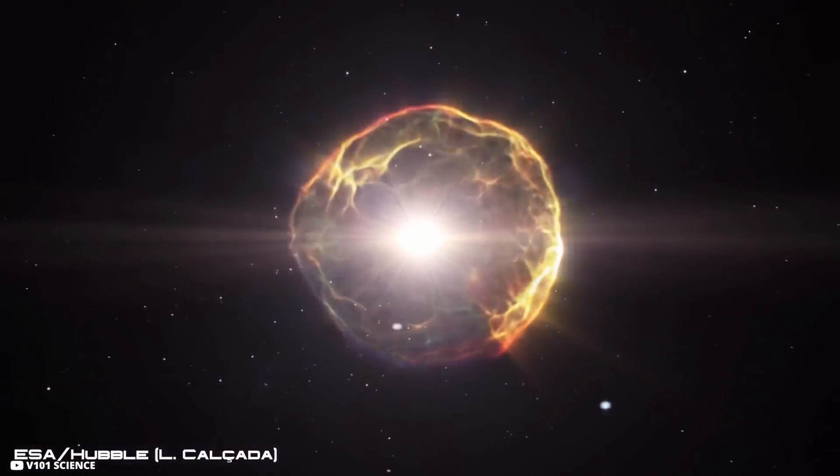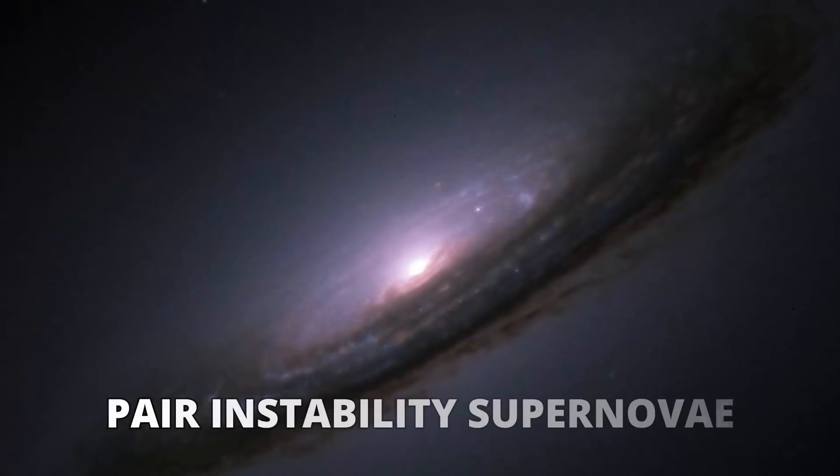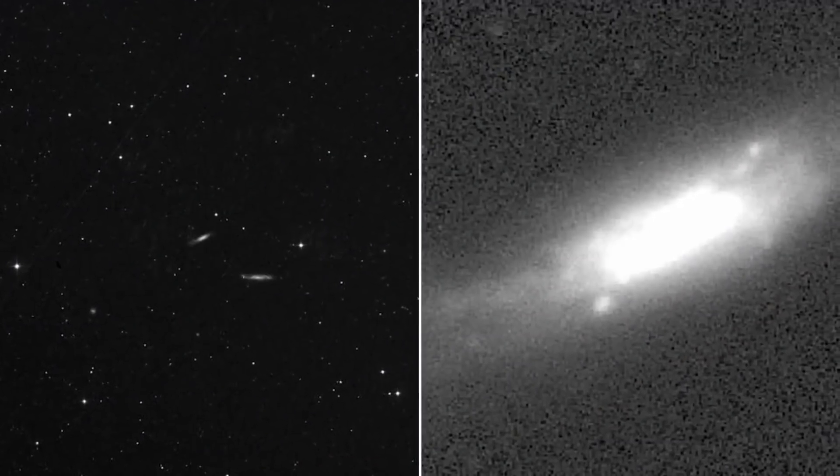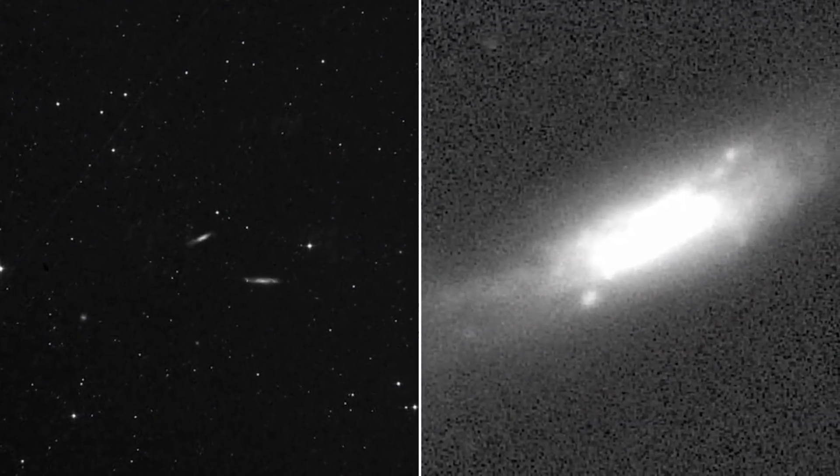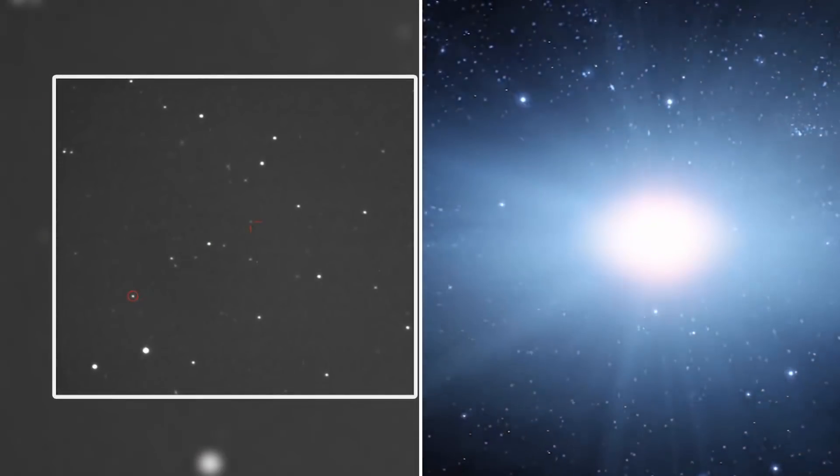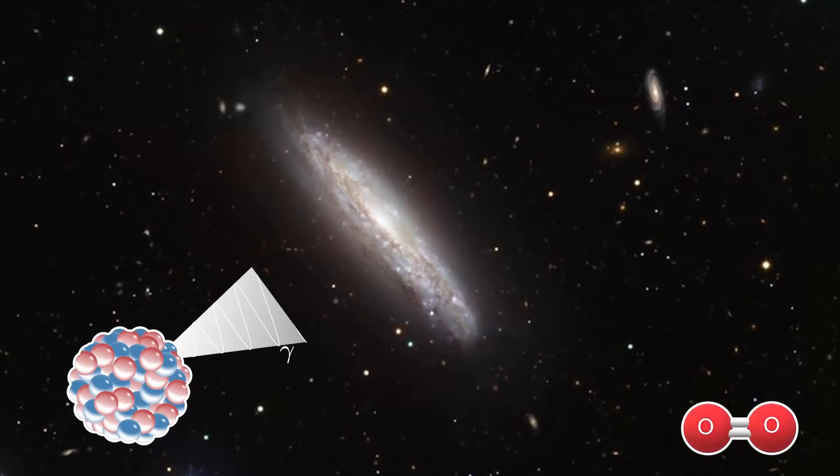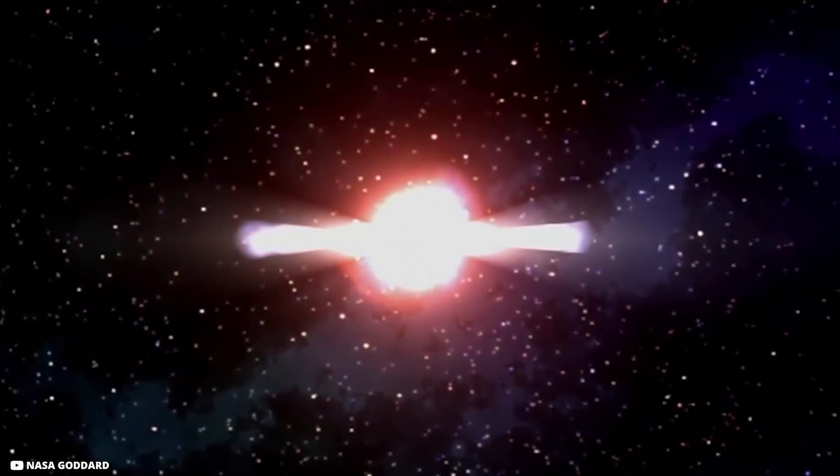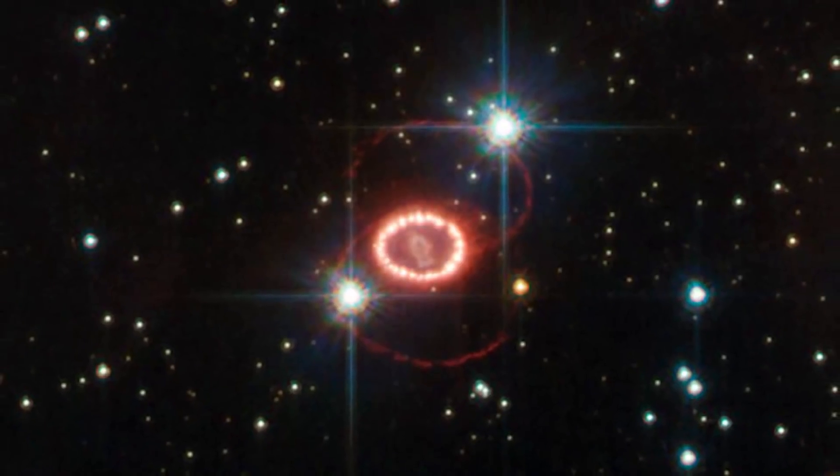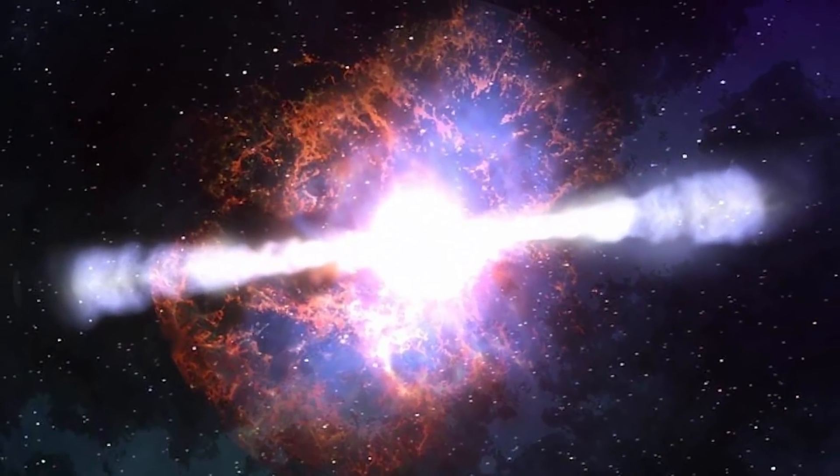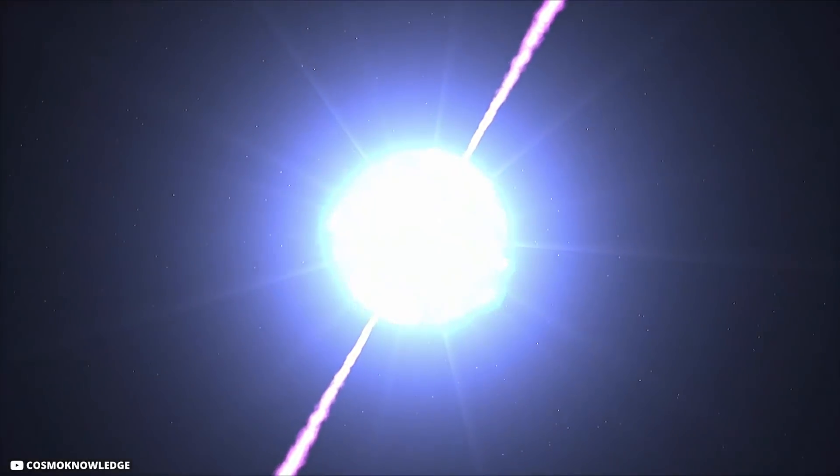The explosions that leave no trace are known as PISN, or pair instability supernovae, and scientists believe that this is how the initial stars, also known as Pop III stars, vanished. The SN2007BI is thought to be the first pair instability supernova ever seen. The oxygen core of a supernova generated by a gamma-ray driven antimatter manufacturing star became so massive that it began to discharge intense photons, creating pairs of electrons and antimatter positrons. The star collapsed as matter and antimatter annihilated each other, causing its oxygen core to ignite in a huge nuclear explosion that decimated the whole star.